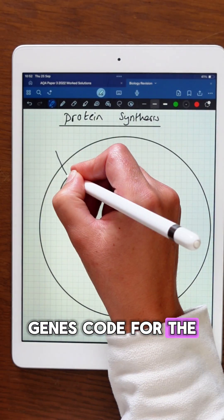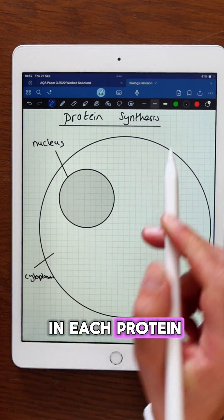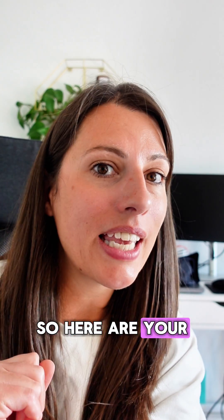DNA, specifically genes, code for the sequence of amino acids in each protein, but DNA cannot leave the nucleus. So here are your key steps.